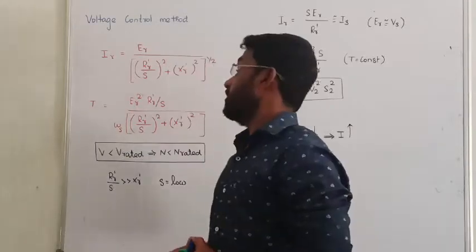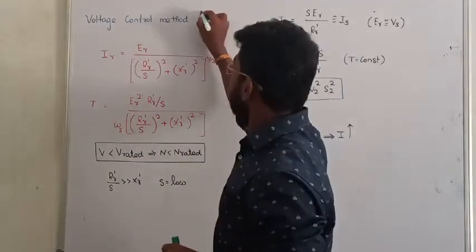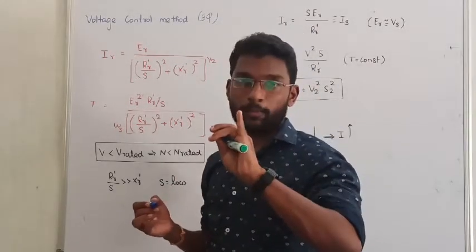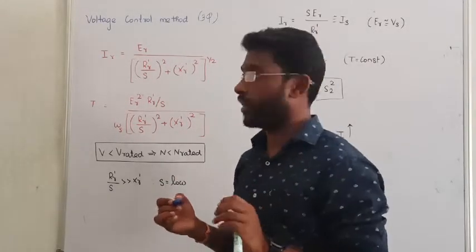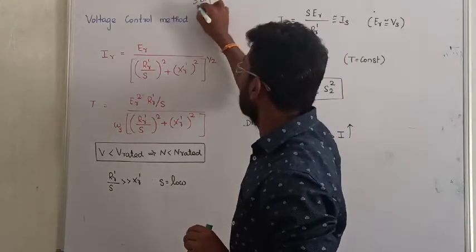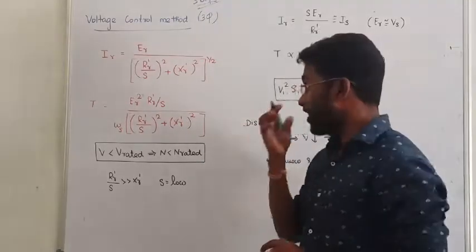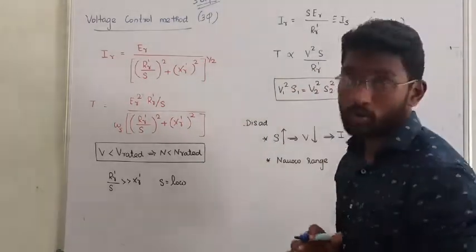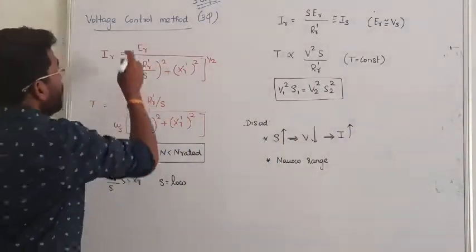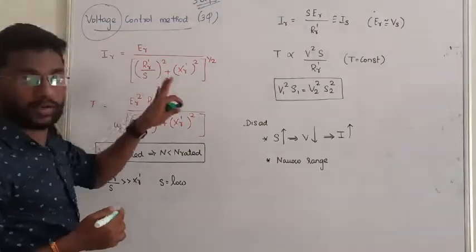Let us see method number one: the three-phase induction motor speed controller. We saw two methods — one is slip ring and another one is synchronous speed control. Now we are looking at slip control. The first method under slip control is the voltage control method. In this method, we are going to vary the value of voltage.